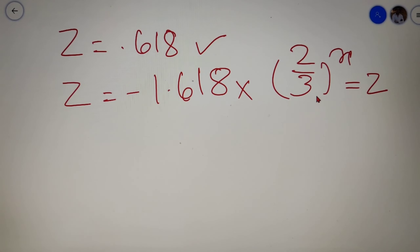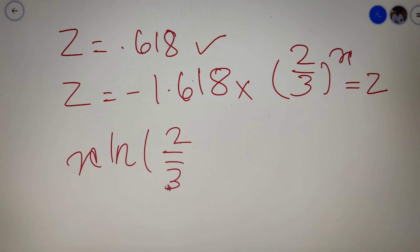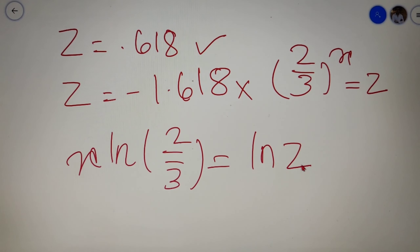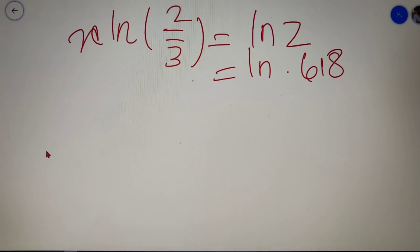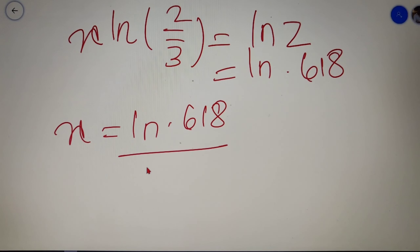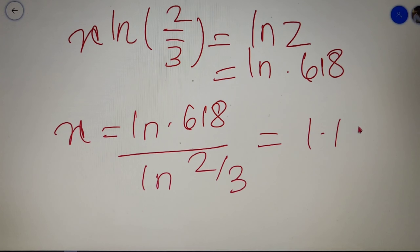To solve for x, we take natural log on both sides and get x times ln(2/3) equals ln(z). Replacing z with 0.618, we get ln(0.618). So finally the value of x equals ln(0.618) divided by ln(2/3), which upon calculation gives x equals 1.186.